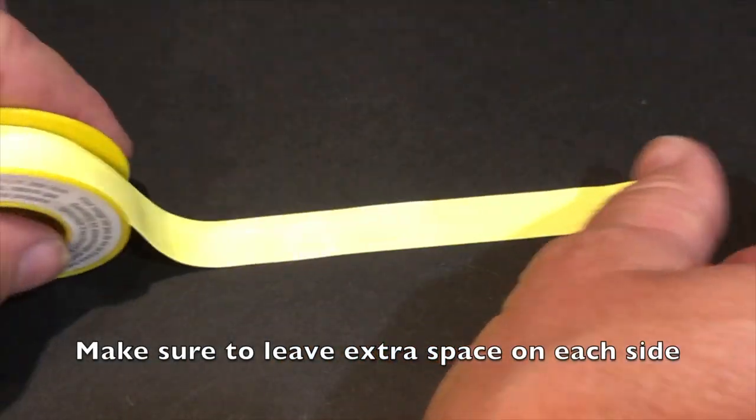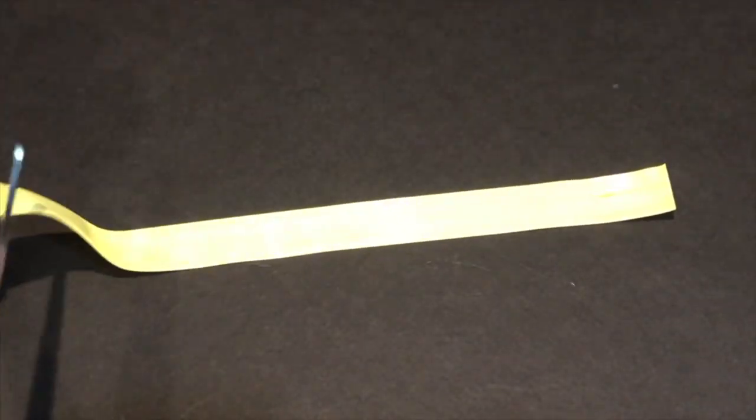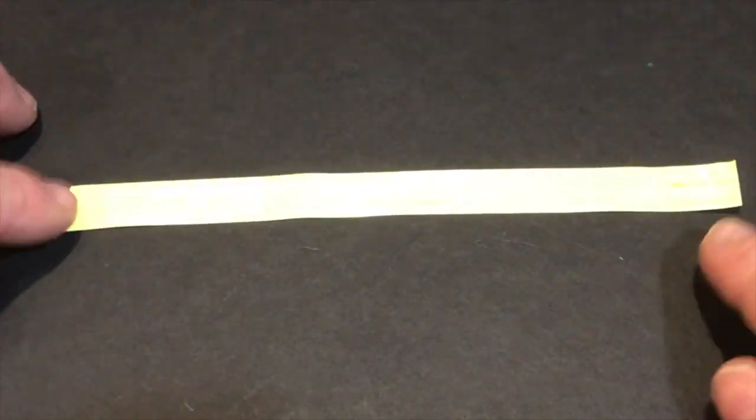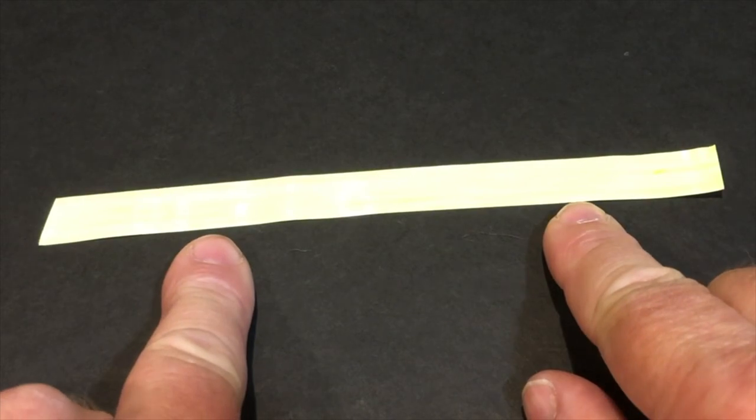So to show you how it's done here, it's basically going to cut a piece of tape out as long as you kind of need it. Maybe just a little bit longer of the message you're going to write, because you want to be able to pull out the sides.